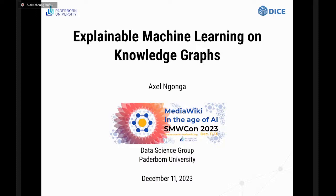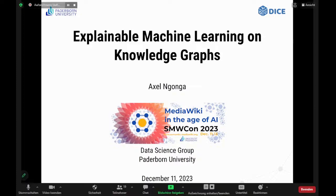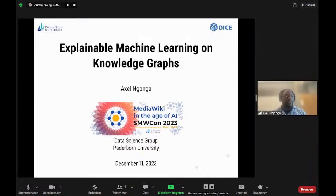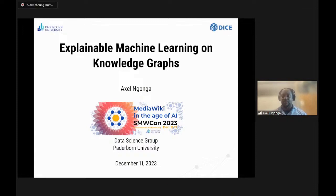If you wanted to remember this talk by just one thing, it would be this: because of the availability of knowledge graphs — really through Semantic MediaWiki and other forms of wikis — we now have the possibility to actually learn directly on knowledge graphs at web scale, and to have expandable machine learning for really low amounts of resources.